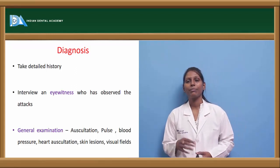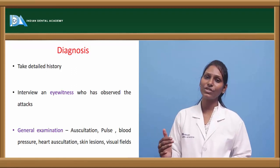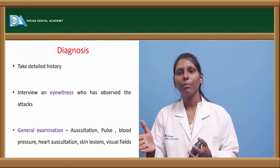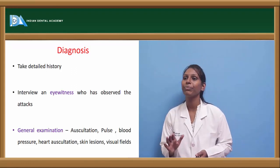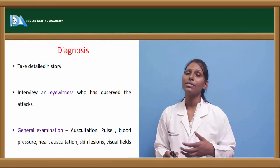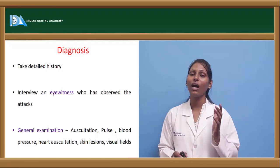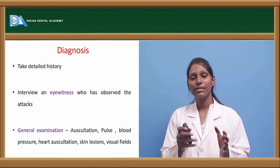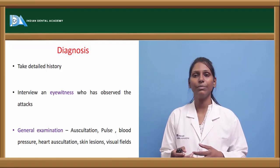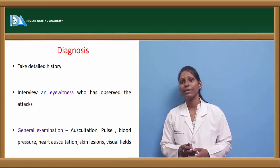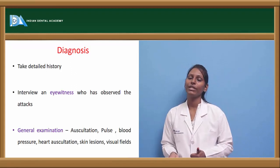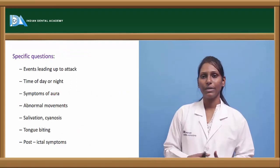Coming to diagnosis of epilepsy, proper history itself gives a clue and helps make a proper diagnosis. Take a detailed history and interview an eyewitness or attendant who has observed the attacks — how the attack occurred, how long it lasted, whether the patient had any movements or muscle rigidity, and post-ictal phase symptoms. General examination including auscultation, pulse, blood pressure, heart auscultation, skin lesions, and visual field checking will also help reach a proper diagnosis.